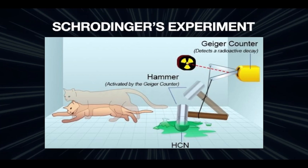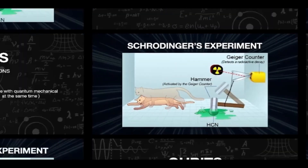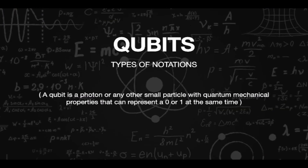A quantum computer can cover numerous paths at the same time and do billions of years' worth of computing in a matter of hours or minutes. A quantum computer is made up of qubits, which is a photon or any other small particle with quantum mechanical properties that can represent zero and one at the same time.